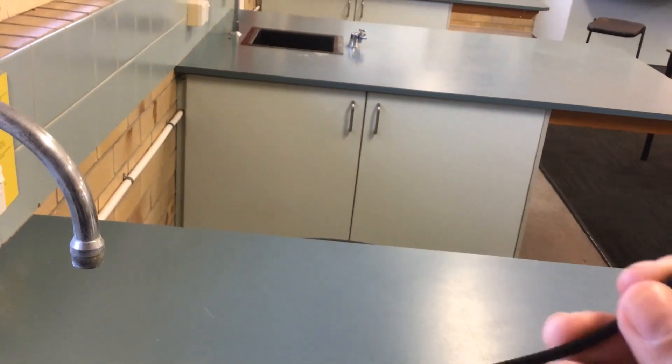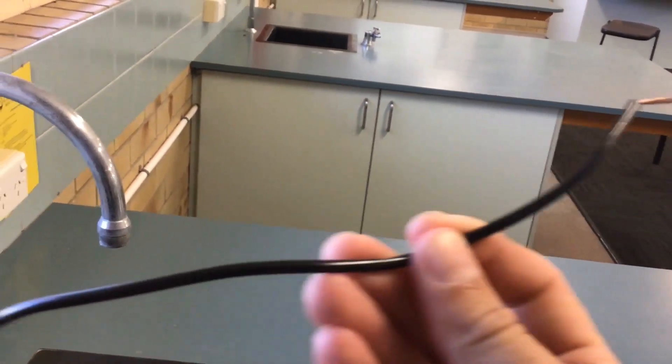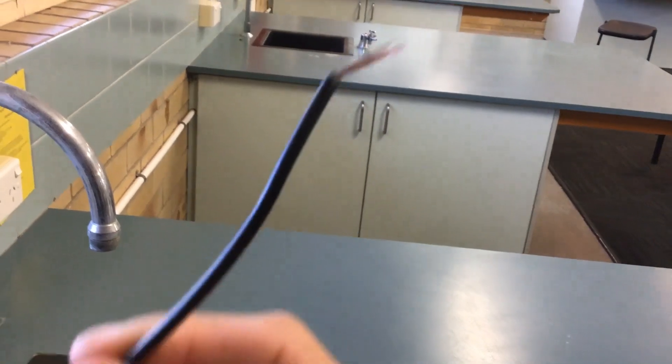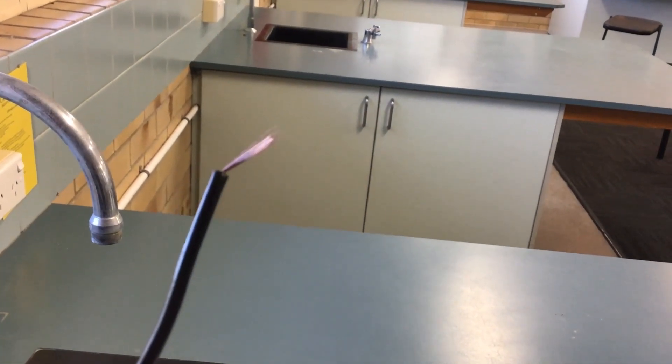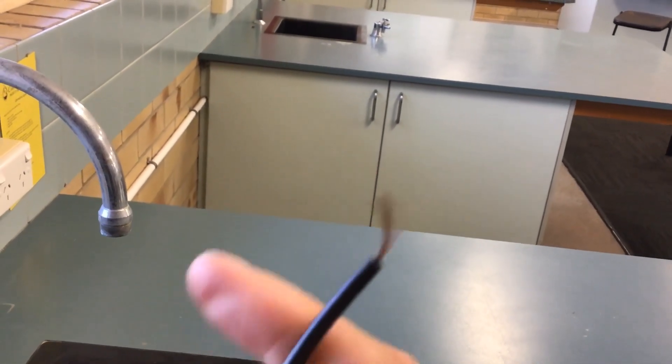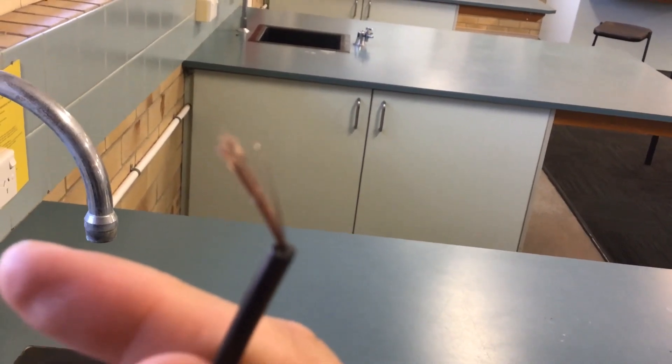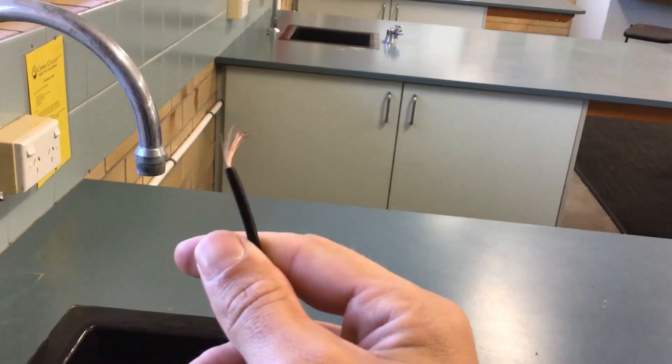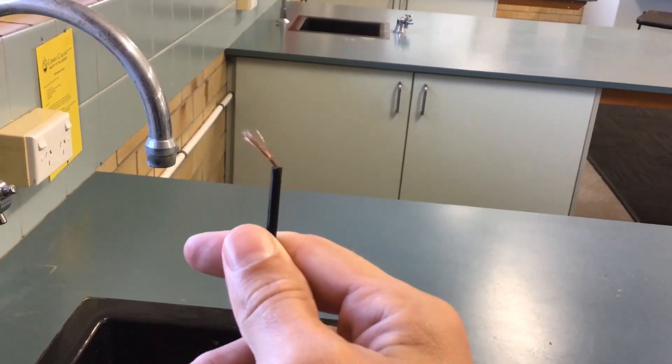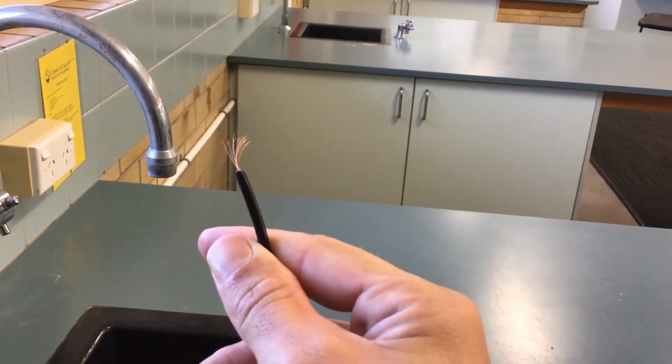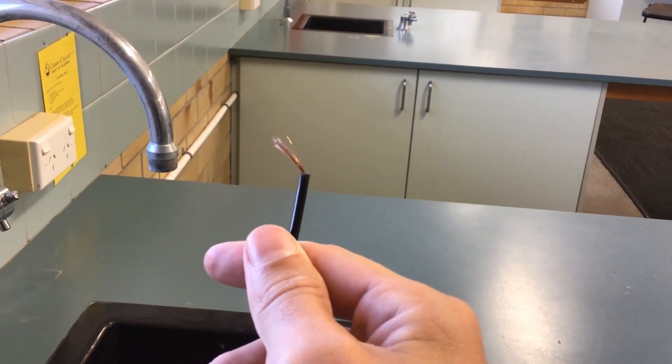And what I have here is an example of where copper can be seen in real life. So here we have an electrical wire, and inside the plastic coating, you can see that there's long, thin strips of copper. And why do we have long, thin strips of copper in this electrical wire? Because copper is very good at conducting electricity.